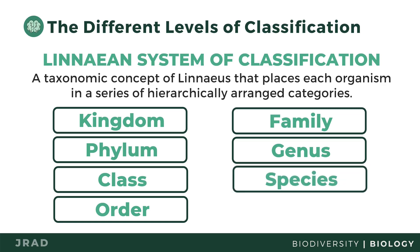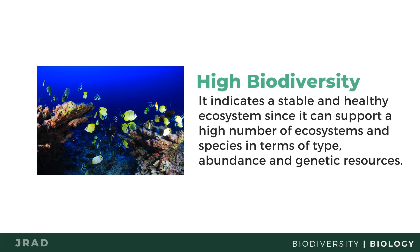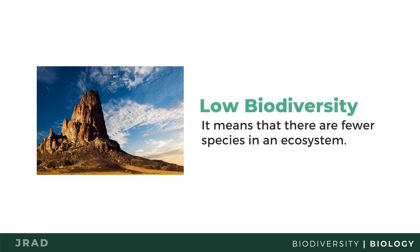Biodiversity is not only used to describe the variety of life on Earth — it is also used to indicate how healthy an ecosystem is. A high biodiversity indicates a stable and healthy ecosystem since it can support a high number of ecosystems and species in terms of type, abundance, and genetic resources. On the other hand, low biodiversity means relatively fewer species abundance and number, and indicates that food webs present are relatively simpler.